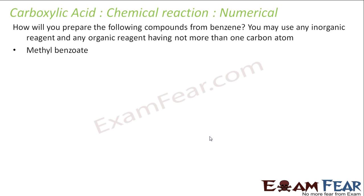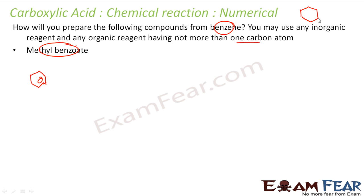The question is: how will you prepare methyl benzoate from benzene, using organic reagents with not more than one carbon atom? Starting from benzene, one approach is to first create a Grignard reagent (PhMgBr), then react that with carbon dioxide and do hydrolysis to get benzoic acid, and then perform esterification to get methyl benzoate.